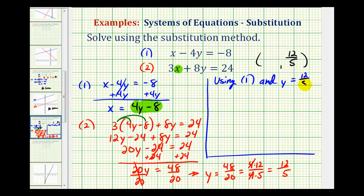We would have x equals four times y, or four times twelve-fifths, minus eight.